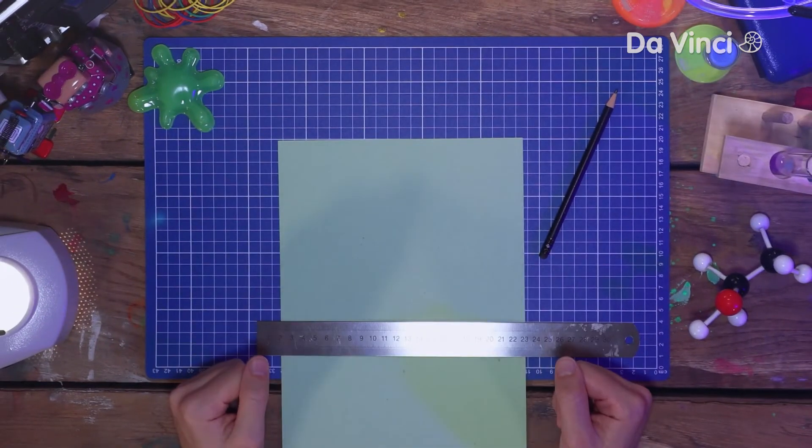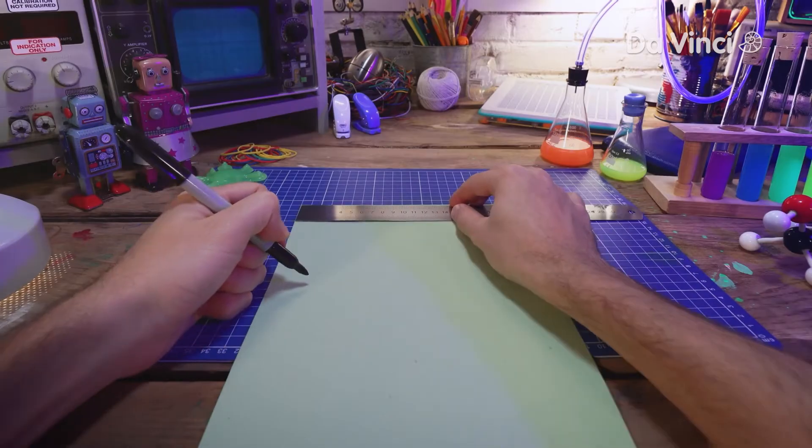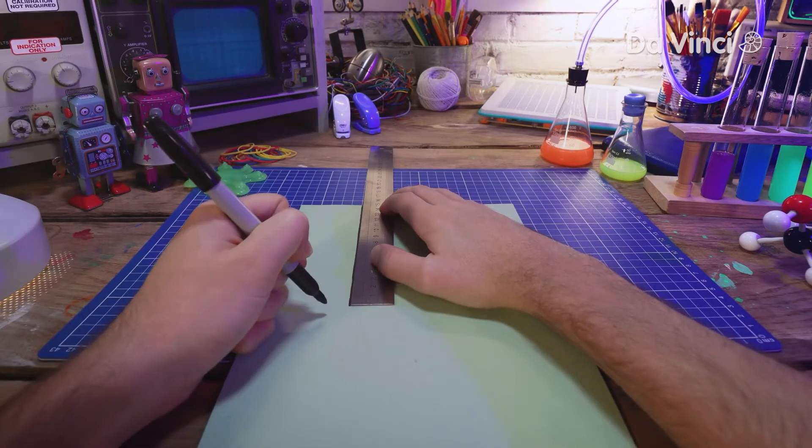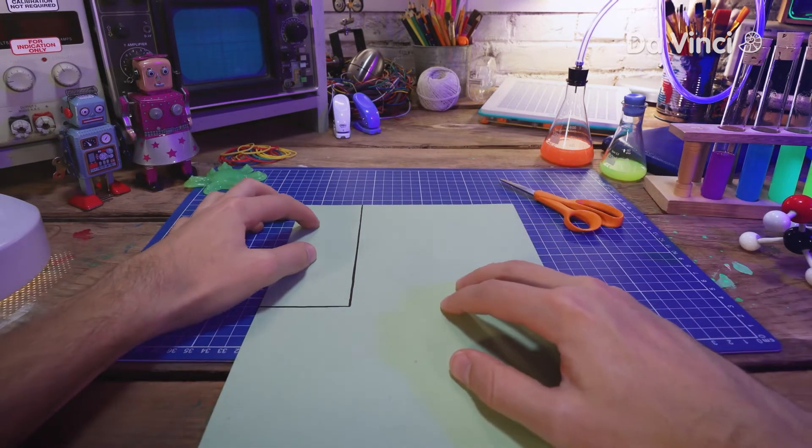Start off with the card, ruler and pencil. Using your pencil or a marker, measure out a long rectangle shape. This can be any size you want. Then grab your scissors and cut this out.